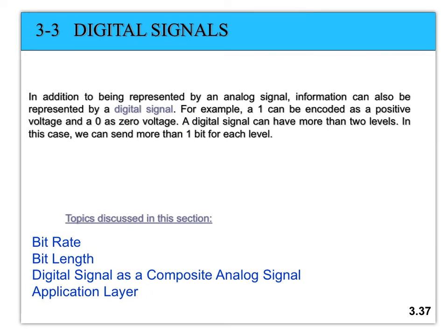In addition to being represented by an analog signal, information can also be represented by a digital signal. A digital signal has a predefined finite set of values, not continuous values. For example, data of '1' from the upper layers can be represented by a positive voltage like 3 or 5 volts, and '0' can be represented by 0 voltage — although this is not the best encoding scheme, it is one representation.